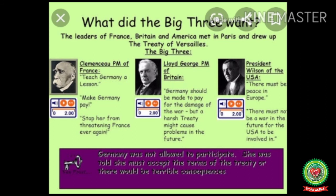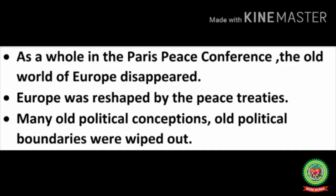There was significant conflict among the Big Three. Clemenceau wanted to punish Germany severely and make it economically and politically weak. Lloyd George wanted Germany to pay for war damages, but opposed a harsh treaty that could produce poor consequences and potentially lead to another war. Wilson's view was that there must be peace in Europe, the USA should not involve itself in future wars, and European countries should solve their disputes peacefully. As a whole, after the Paris Peace Conference, the old world of Europe disappeared — Europe was reshaped by peace treaties, old political boundaries were wiped off, and Austria-Hungary was divided into two separate countries.